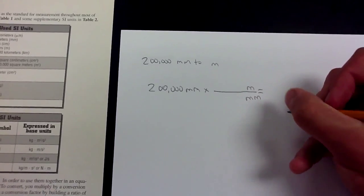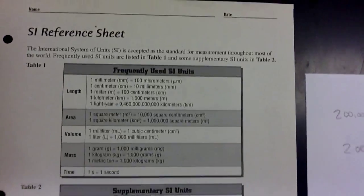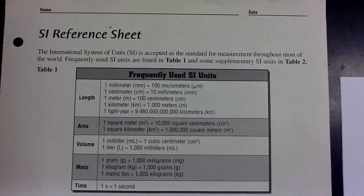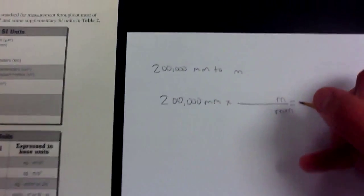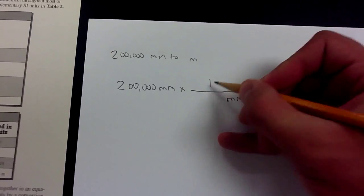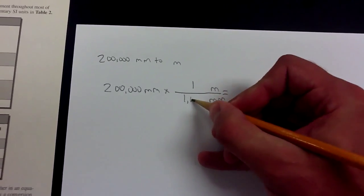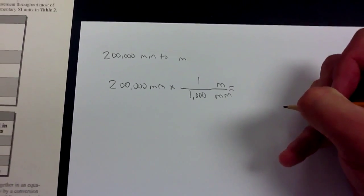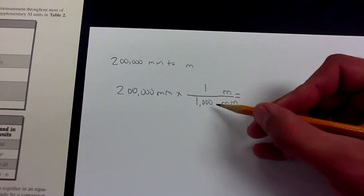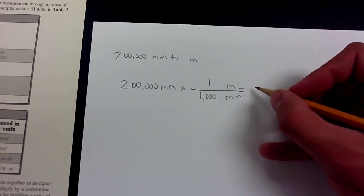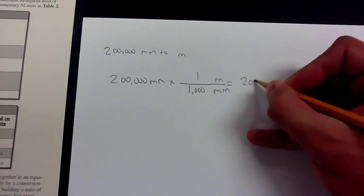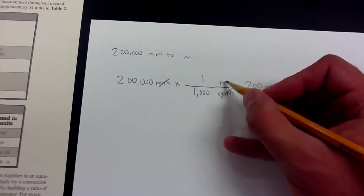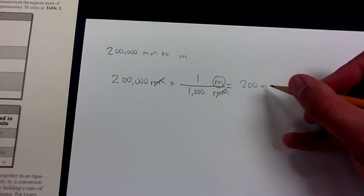Now look for a conversion between millimeters and meters on the chart. We don't have that directly, so: 1 meter is 1,000 millimeters. Now do the math: take 200,000 times 1, divide by 1,000, and that gets you 200 meters. The millimeter units cancel, and all you're left with is meters, so you know it's the right answer.